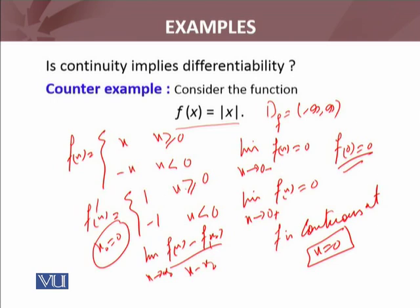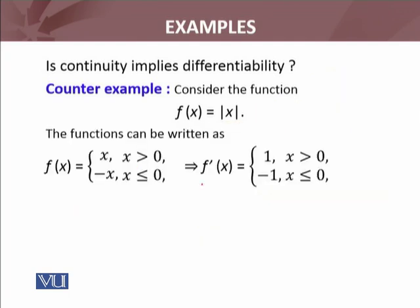If I move from the right side, the answer is 1. If I move from the left side, the answer is -1. Zero is the point. From the left side of zero, if I move, the answer is -1. From the right side, if I move, the answer is 1. So the limits are not equal. The left and right sided limits are not equal.